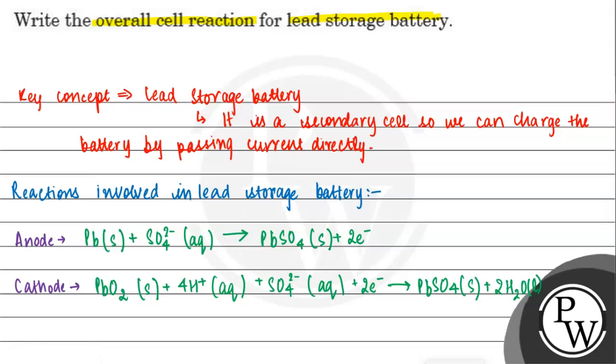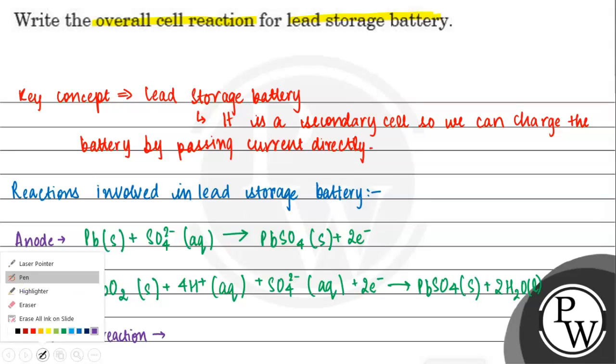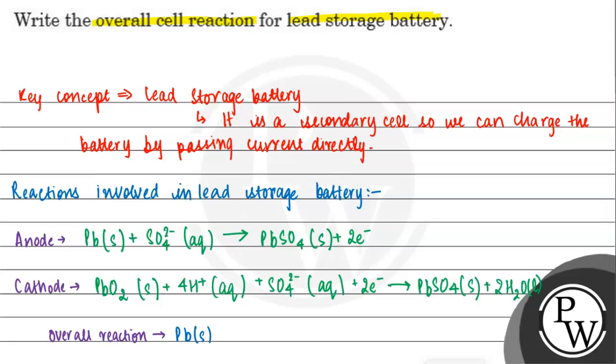Let's see the net reaction. Net reaction or we can say overall reaction. Overall reaction will be Pb which is in solid state plus PbO2 which is also in solid state.